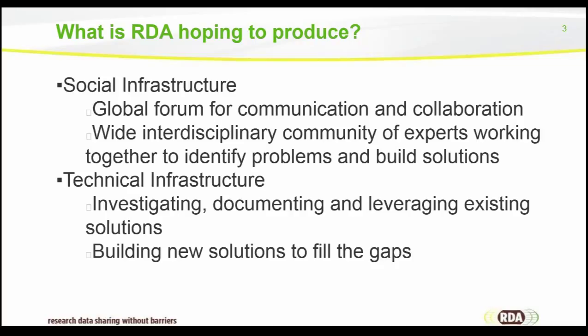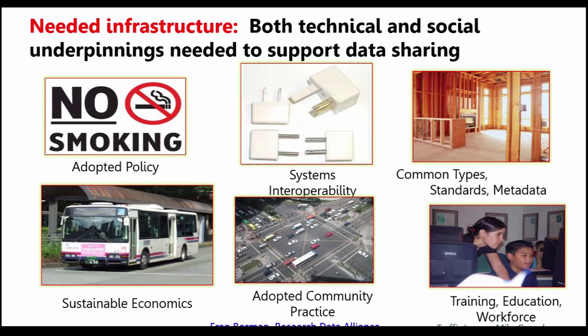I'm going to share a couple of slides from Fran Berman, the head of the RDA US organization, because they really present a picture of what infrastructure is in other areas than data. If we look at what infrastructure is made up of, there are maybe six key areas. There are adopted policies that state what you can do and what we agree to adhere to. There are solutions for systems of interoperability — the classic case being that we can all plug our laptops in no matter what country we're in because we have adapters that work with different plug sizes. There are also common types, standards, and metadata — common sizes for pieces of wood, buildings, wires, and cables. All of these things are infrastructure in the physical world, and there are analogs in the data world as well.